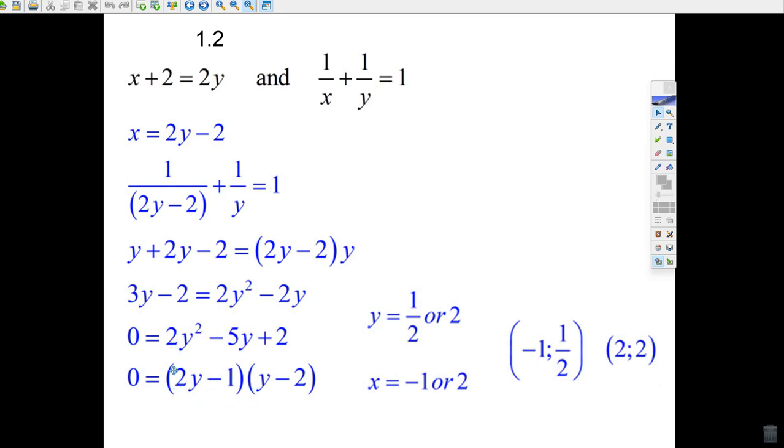2y times y gives me 2y squared, 2 times 2 there gives you 4y, and it's minus, minus another 1y on the inside is minus 5y, and minus 1 times minus 2, that looks right.